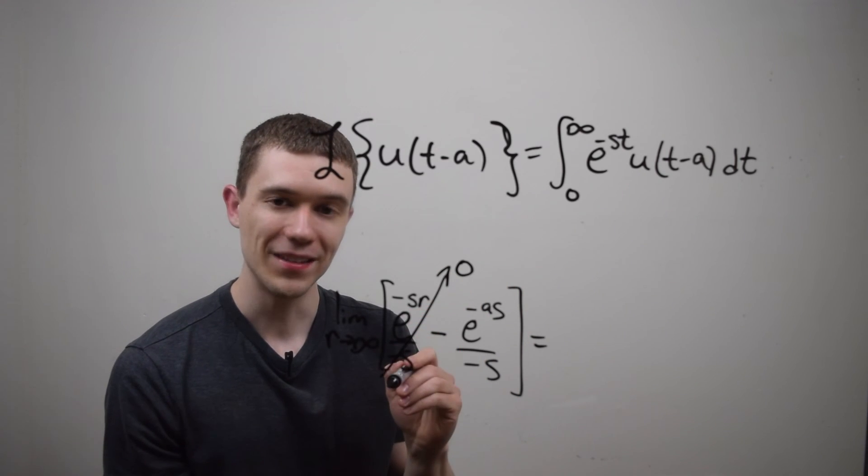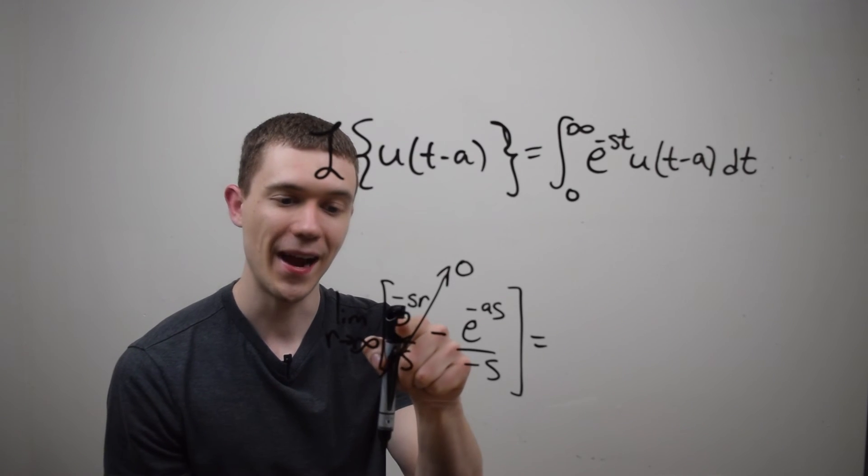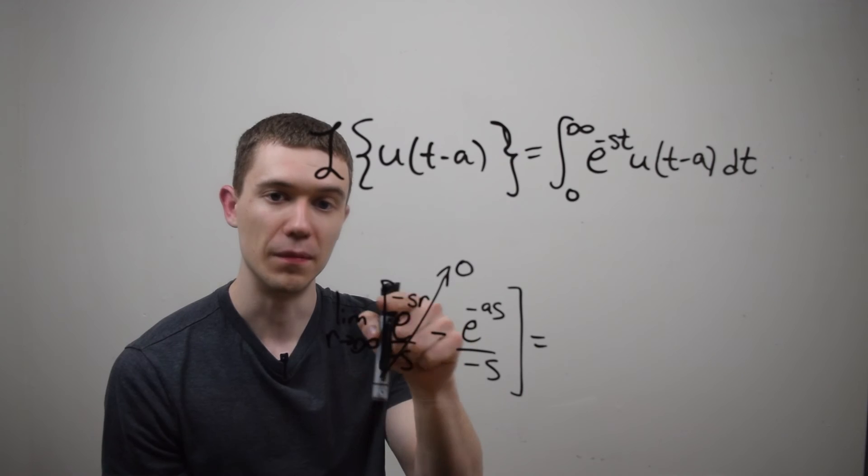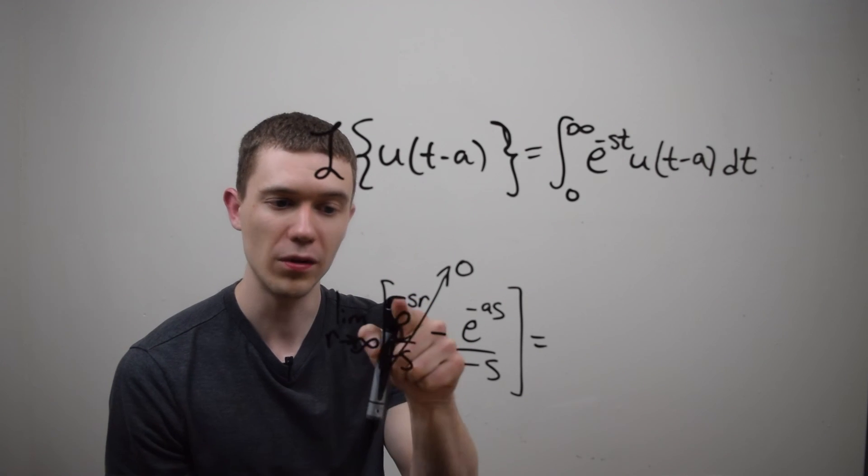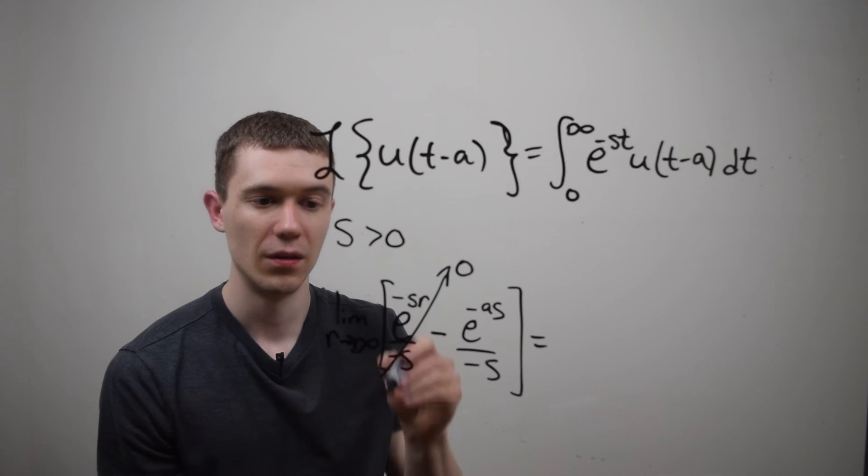The only way that that's going to work is if this numerator goes to zero. And that happens when e tends to minus infinity. So how can I ensure that this works? Well, s is going to have to be positive, right?